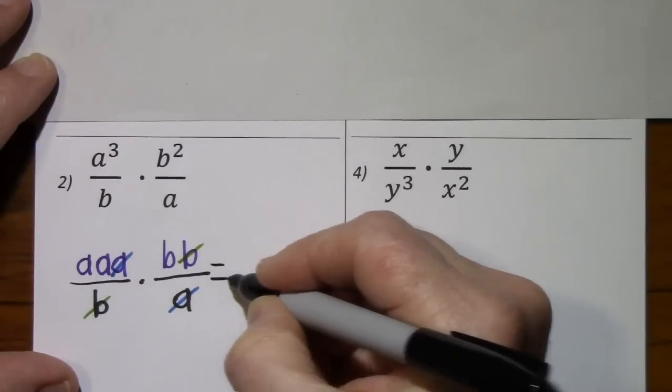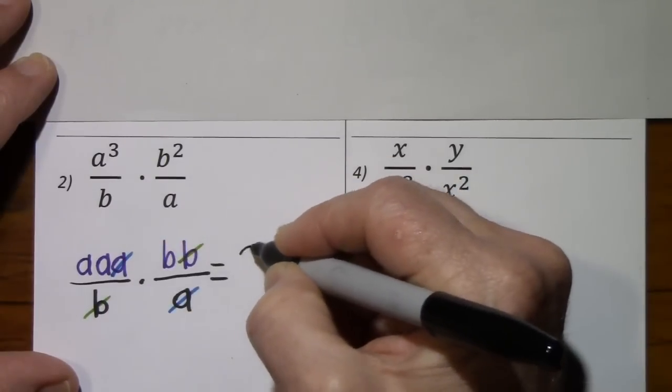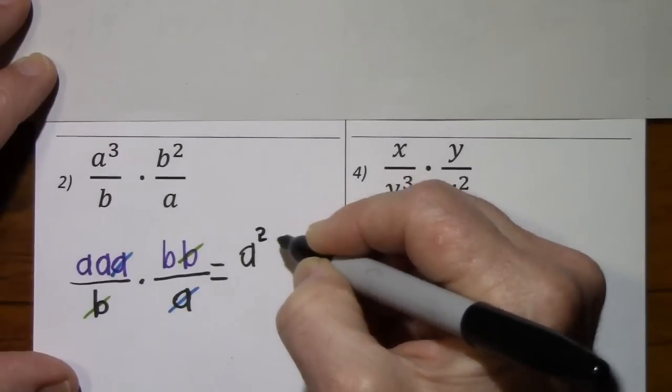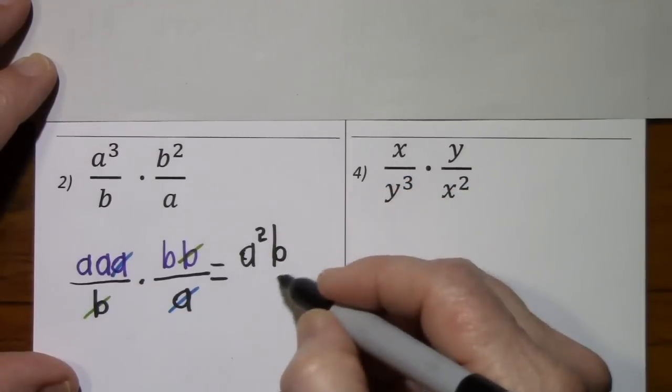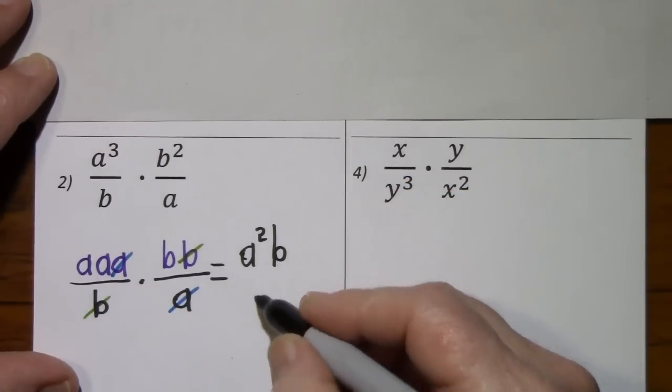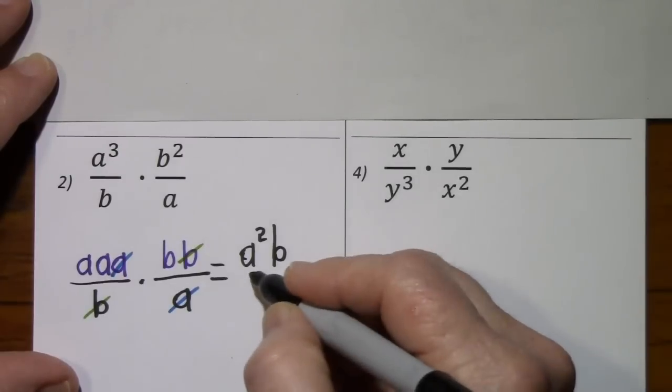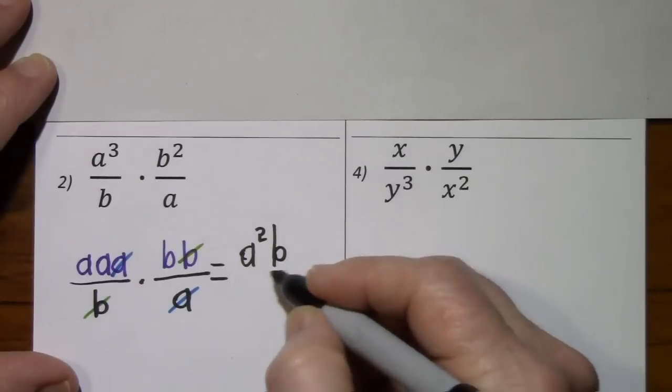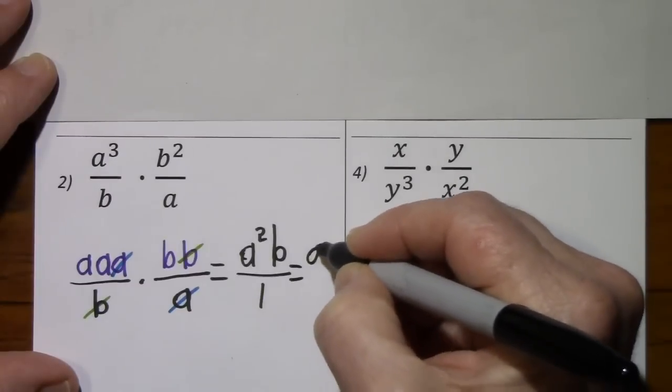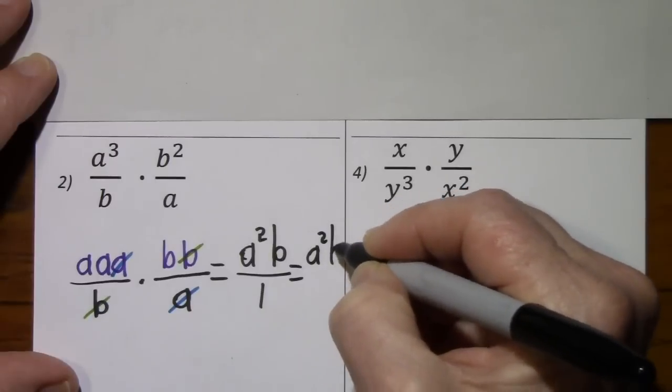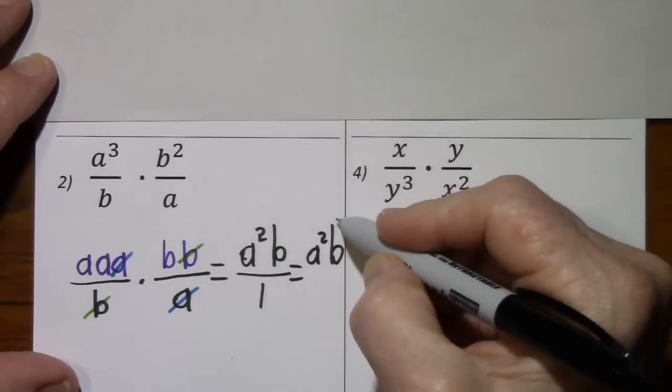And what do we have left standing? a squared times b. This is over a 1, but it's not proper to write that in simplest form. You would have that, but then you would have to keep going and say a squared b is the simplified answer.